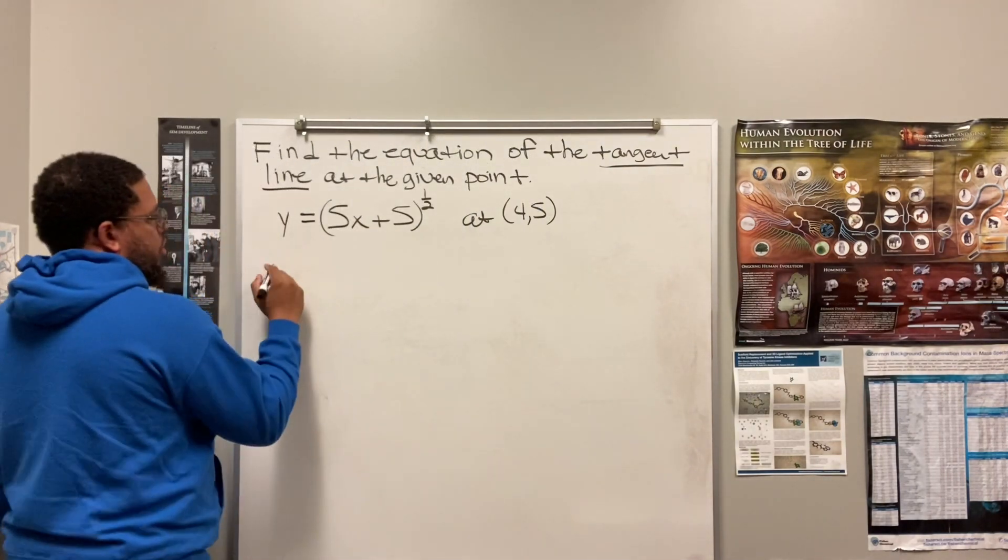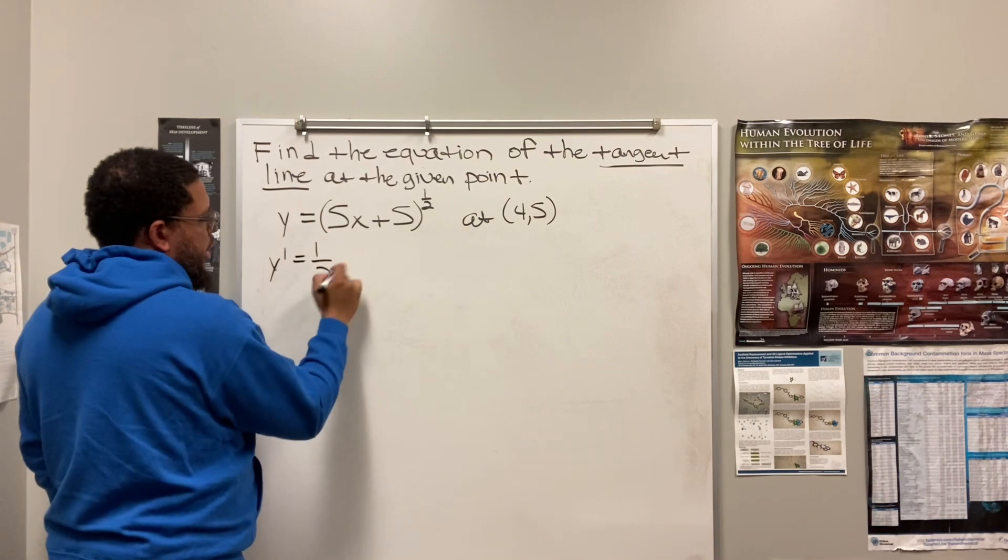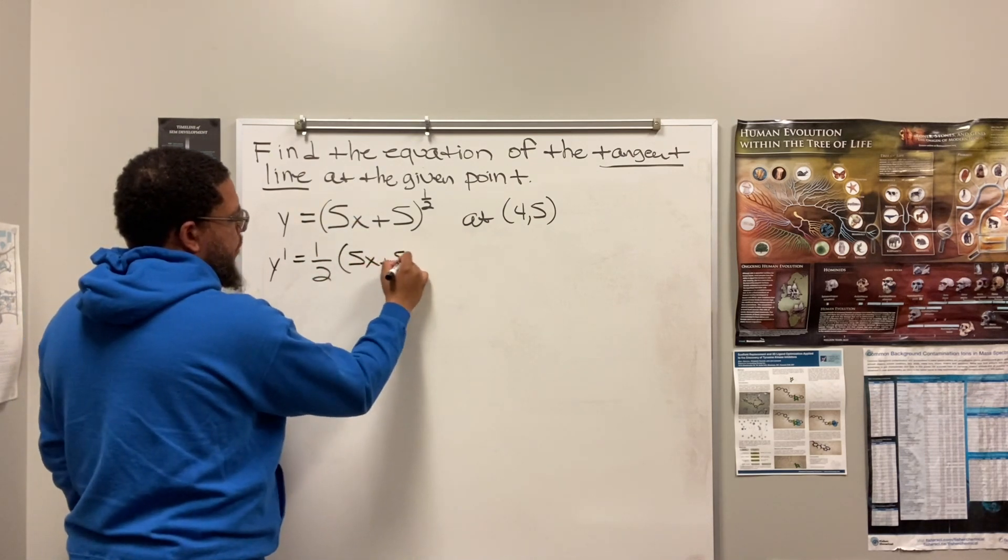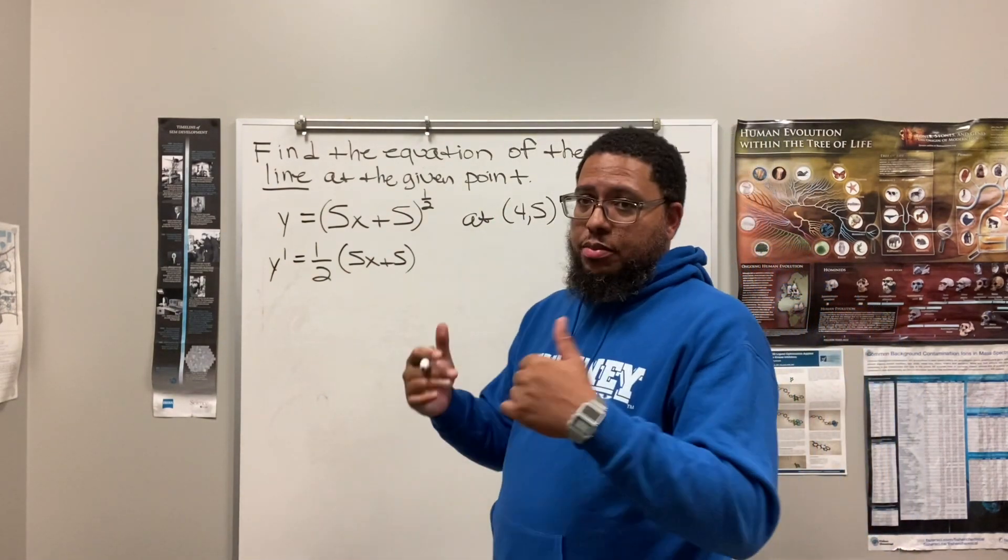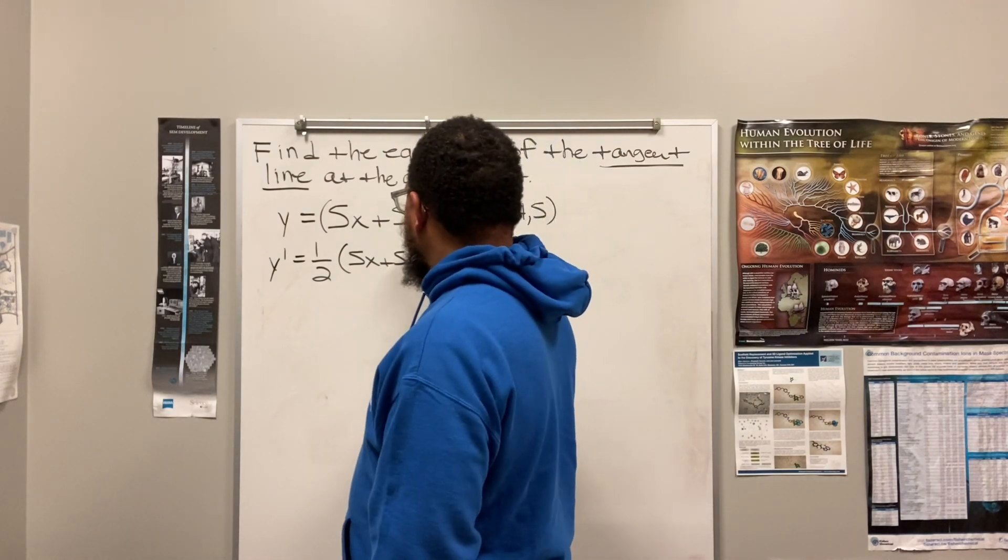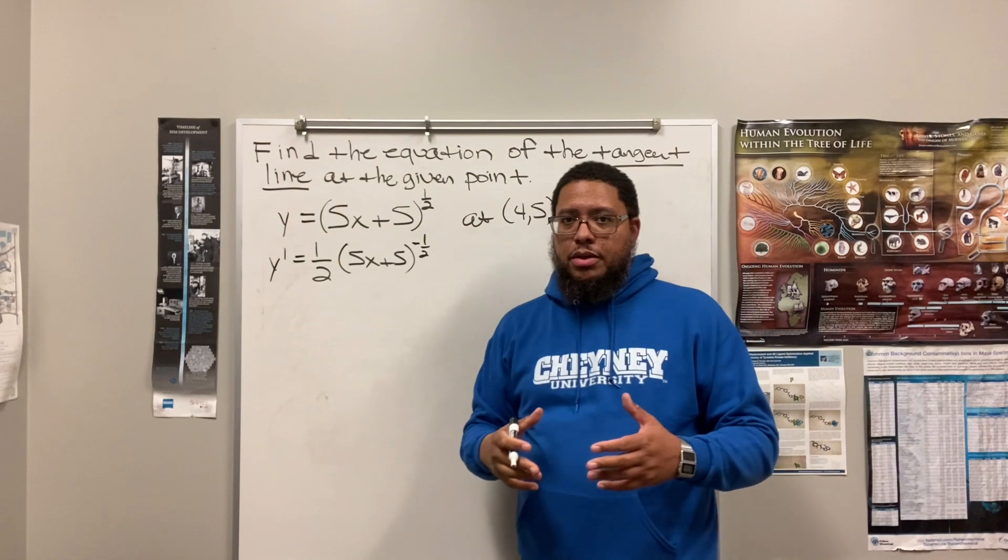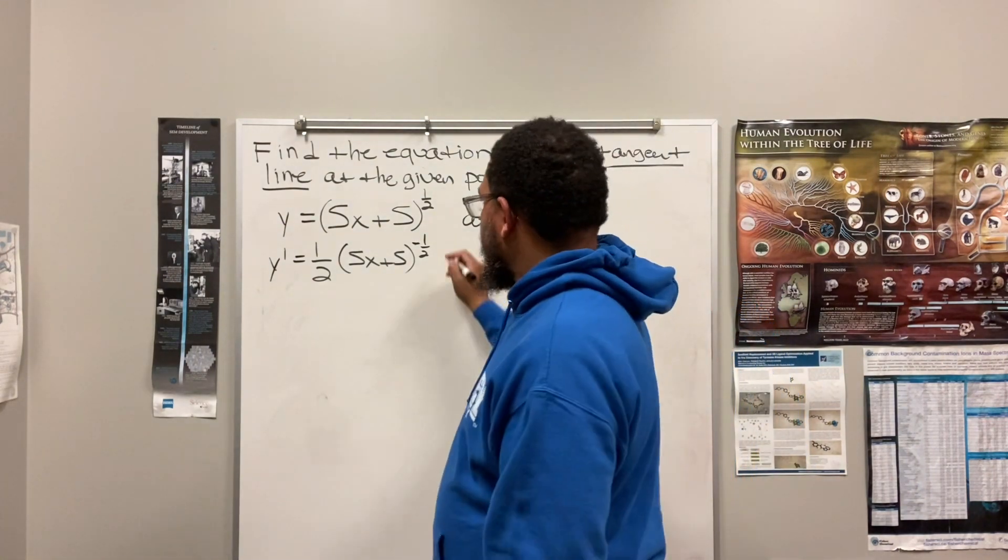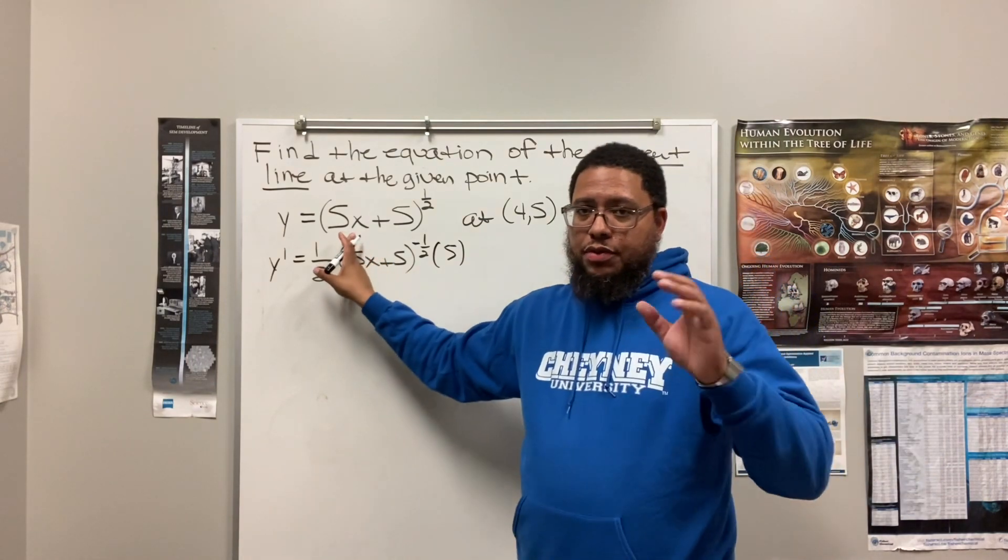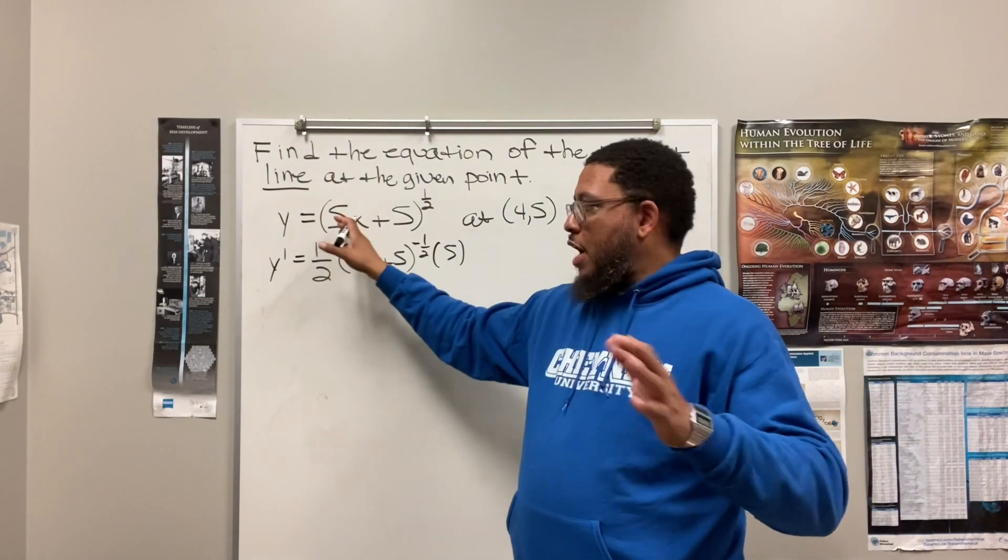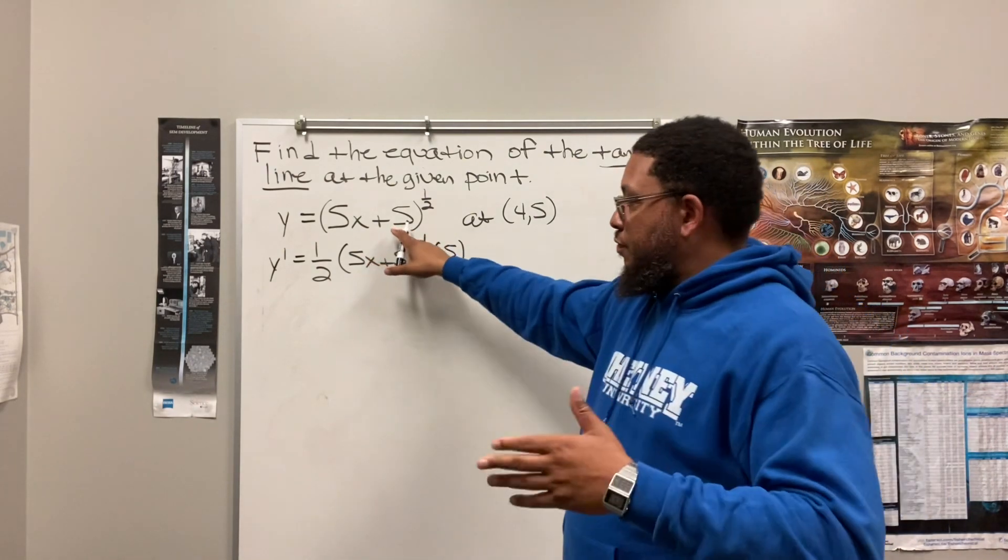So this is how we use the chain rule. We're going to use the power rule for this function. So we're going to swing the 1 half to the front, and then we keep the original function just as it was. But with the power rule, don't you got to subtract 1 from the original exponent. The 1 half is the original exponent. So we got to subtract 1 from 1 half. So 1 half minus 1 is negative 1 half. So that's our new exponent, negative 1 half. But then with the chain rule, you got to take the derivative of that function, 5x plus 5. So the derivative of 5x plus 5 is 5.